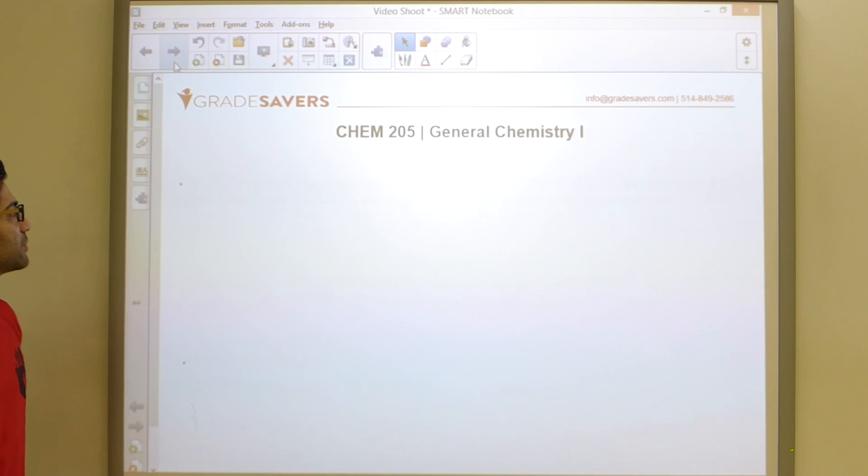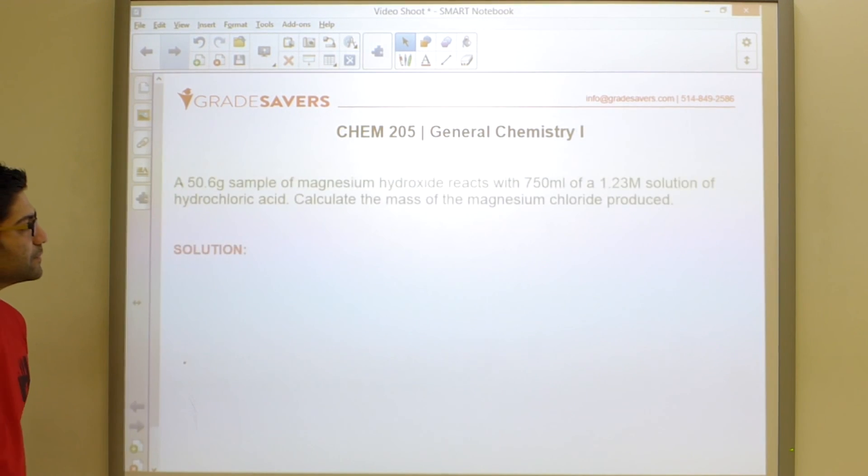Okay guys, let's take a look at the next problem. A 50.6 gram sample of magnesium hydroxide reacts with 750 milliliters of a 1.23 molar solution of hydrochloric acid. Calculate the mass of magnesium chloride produced.